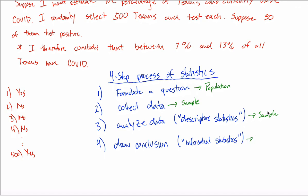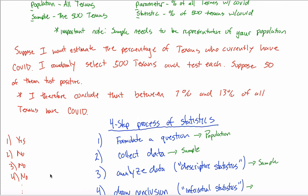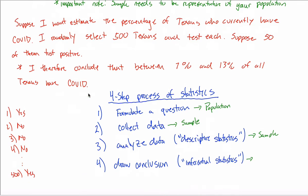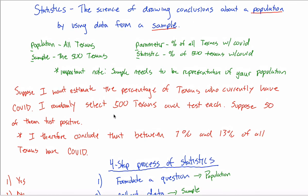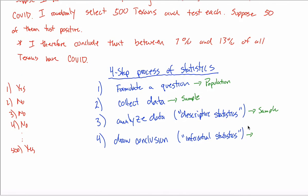But your conclusion, importantly, is not about the sample. You don't want to say, all right, I did all this analysis, and now I can confidently say that 10% of these 500 Texans tested positive. That's a true statement, but it's not your conclusion, because you want your conclusion to answer the question that you were asking in the first place. And the question you were asking is not what percentage of the 500 Texans have COVID. It was what percentage of all Texans have COVID. So what you want to do when you're drawing your conclusion is make sure that your conclusion is referring to the population and not the sample. That's your four-step process of statistics.